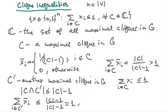This shows that for every single maximal clique inequality, we can find a point that violates exactly that inequality while satisfying all others. This means no maximal clique inequality is redundant — we cannot drop any of them if we want the tightest possible description of this set based on maximal clique inequalities.